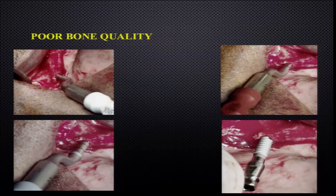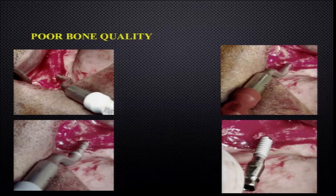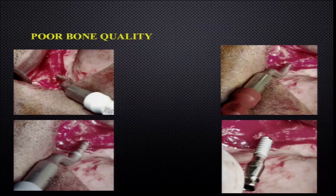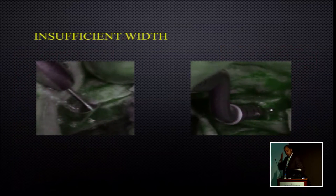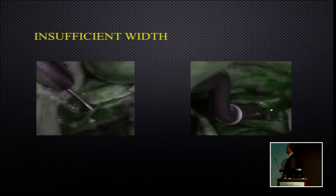For implantation at all extraction sites, we have all the problems. Poor bone quality can be managed in two ways: condensing bone using condensers or undersized osteotomy, and using the implant itself to condense the bone. We don't change the bone quality in the ridge — we only condense bone around our implant to have it embedded in harder bone for better primary stability and better final outcome. The second issue is insufficient width, where we can use ridge splitting, ridge condensation, and similar approaches.